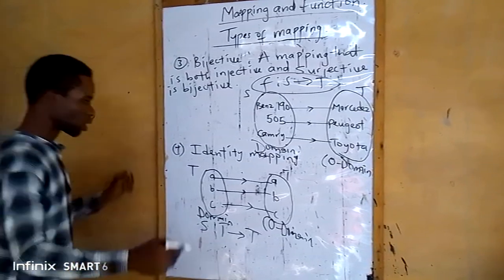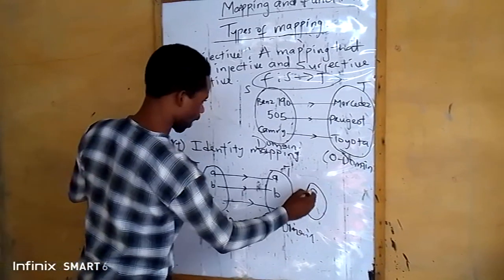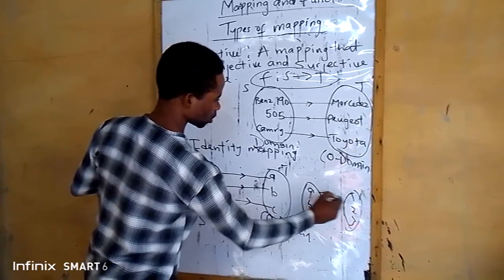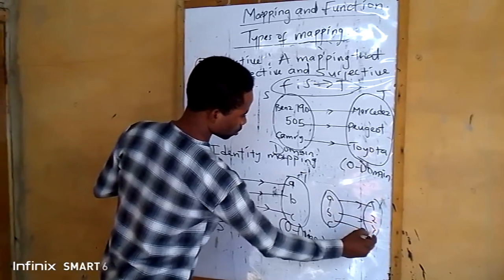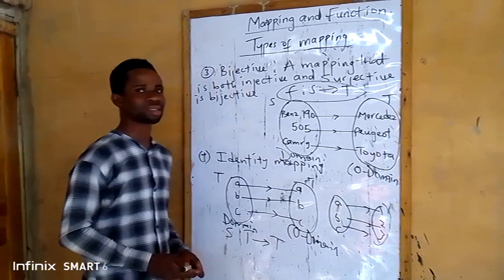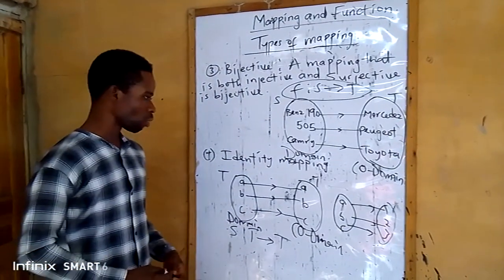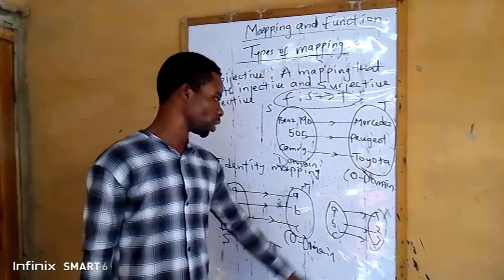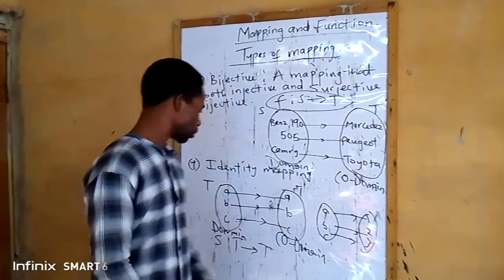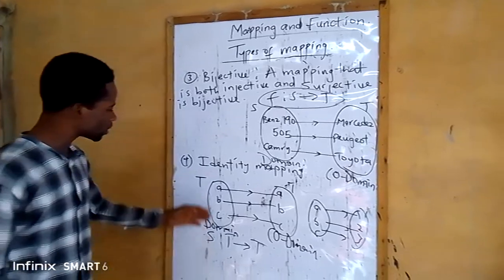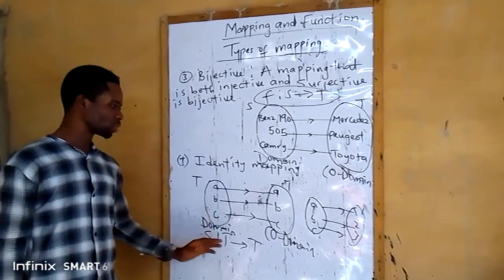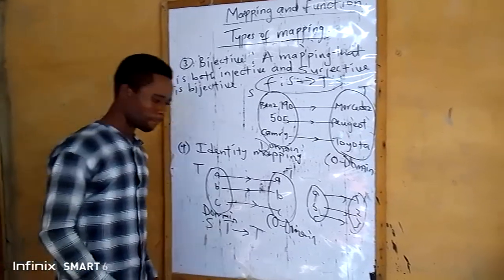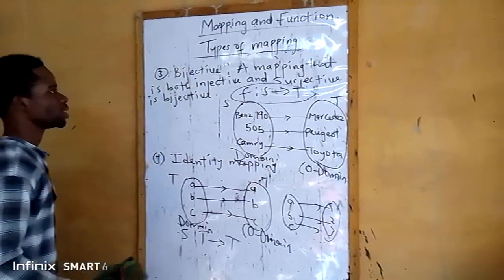When you have something like this — say you have A, B, C in the domain and you have 1, 2, 3 in the co-domain — you cannot call this one identity. This kind of diagram is not identity, because the elements in the domain are different from the elements in the co-domain. So we cannot call this one identity. In the situation where the elements in the domain are the same as the elements in the co-domain, we call it identity mapping.